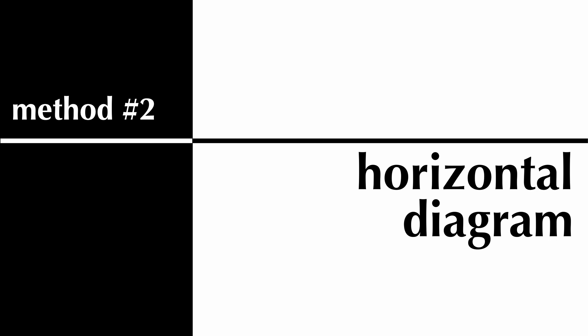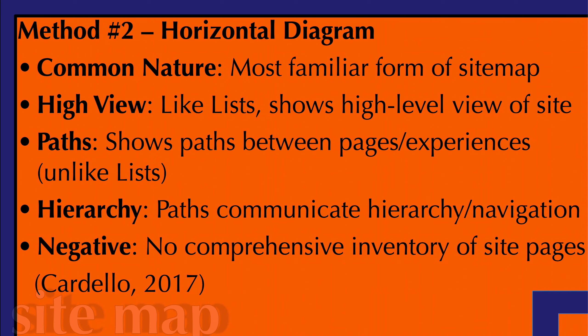The next method is the horizontal diagram. It has a very common nature — it's the most familiar form of a sitemap. It has a high-level view, like lists, so you can see the major parts of a site. A positive that differs from lists is that it shows paths between pages and experiences, normally via arrows between different sections, pages, and experiences. Various paths can also communicate hierarchy and navigation.